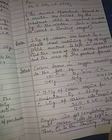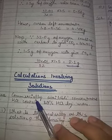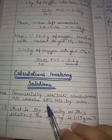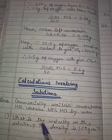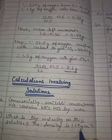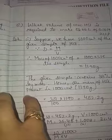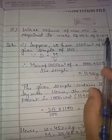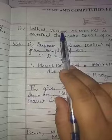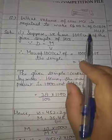Now the third type of calculations involves solutions. Commercially available concentrated HCl contains 38% HCl by mass. What is the molarity of this solution if the density is 1.19 g/cm³? Also, what volume of concentrated HCl is required to make 1 liter of 0.10 molar HCl?